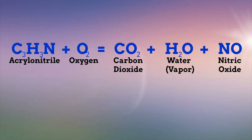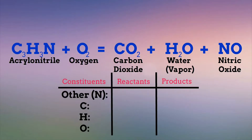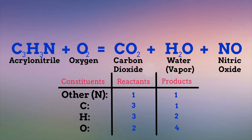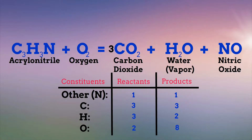Looking at this equation, let's balance the nitrogen atoms first. There is one atom of each on both sides, so we are good with nitrogen. Now we'll focus on our carbon atoms. There are three on the left and one on the right, so we'll change the coefficient of the molecule on the right with the carbon molecule to three. We are now good with our carbon atoms.